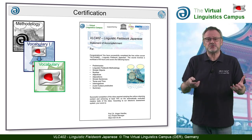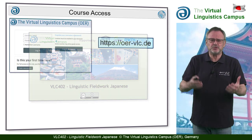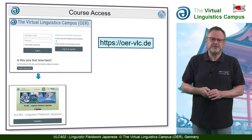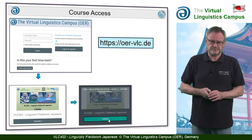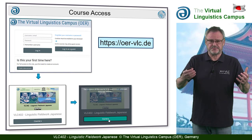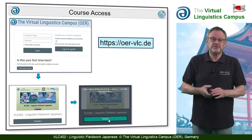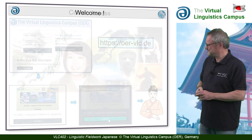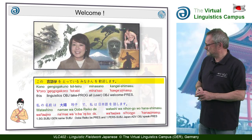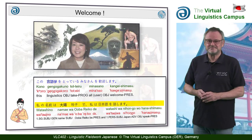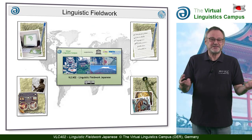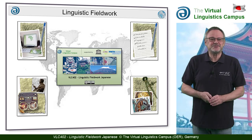And as usual, course enrollment is simple. You have to create your free VLC account first and then self-enroll to your fieldwork class by clicking on the course tile. That's it. And in the course, you will be welcomed by the native speaker — the real one, you know. Welcome to VLC 402 Linguistic Fieldwork Japanese. Thank you very much.